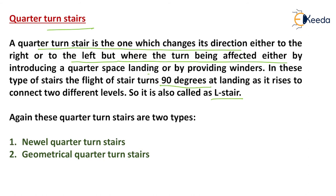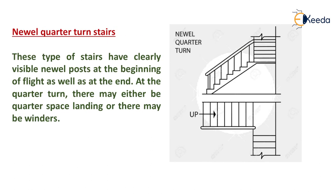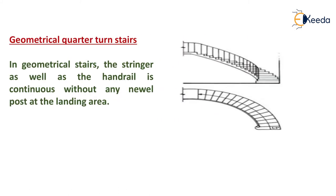Quarter turn stairs are subdivided into two types: newel quarter turn stairs and geometrical quarter turn stairs. Newel quarter turn stairs have clearly visible newel posts at the beginning of the flight as well as at the end, and at the quarter turn there may be either a quarter space landing or winders. In geometrical quarter turn stairs, the stringers as well as the handrail are continuous without any newel post at the landing area.